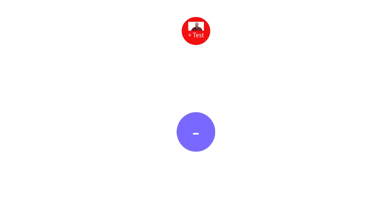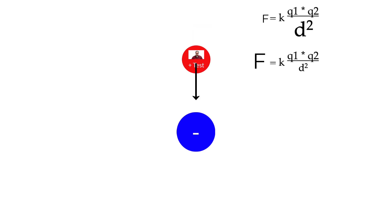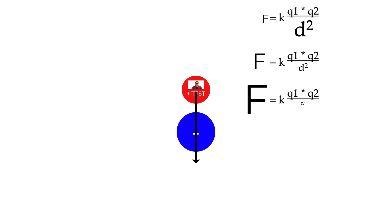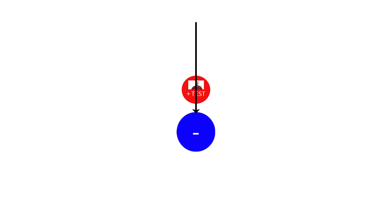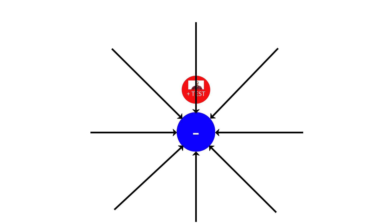Now let's say I stay as a positive test charge and I put myself near a negative source charge because I want to describe the field around it. Opposites attract, and so I'm going to feel an attractive force towards this negative source charge. And the closer I get to that source charge, the more force I feel. You'll notice all of these lines I'm drawing — I've essentially drawn field lines for this negative charge. And I can do this anywhere around the negative charge to draw a field diagram for that charge.